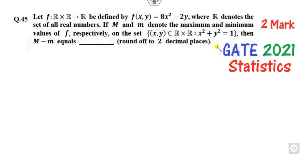Hello students, welcome to the next lecture on question number 45 related to GATE 2021 statistics. It is a two marks problem. In this question, if you read carefully, they are asking about how to find the maximum and minimum value of the function f over this set.